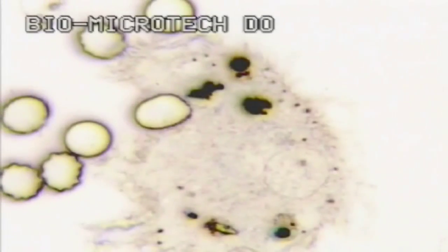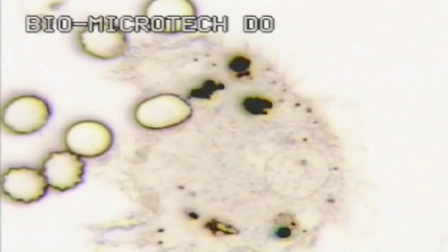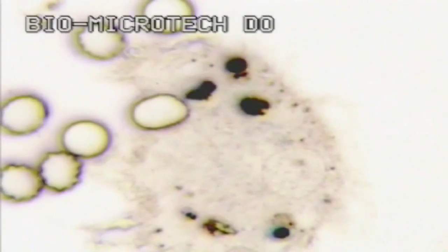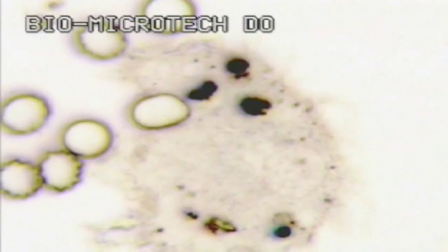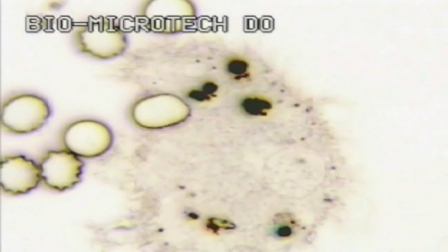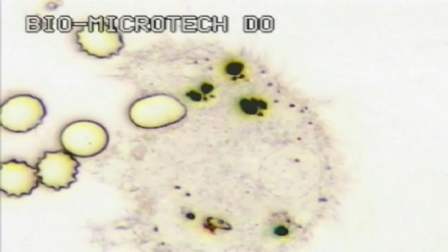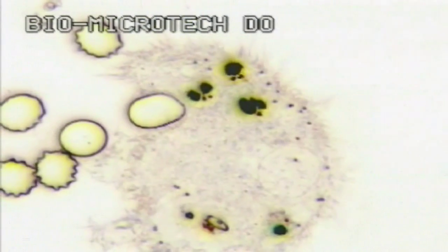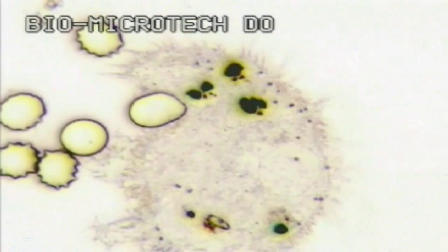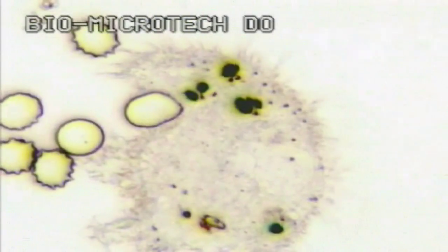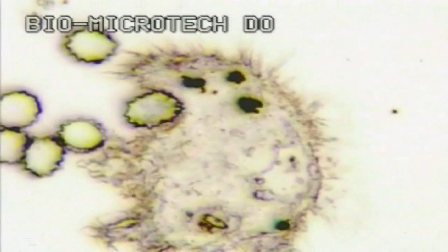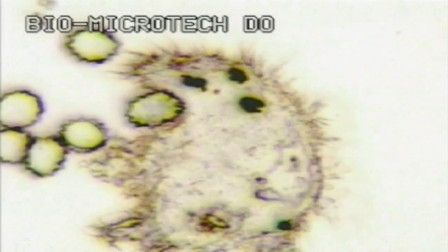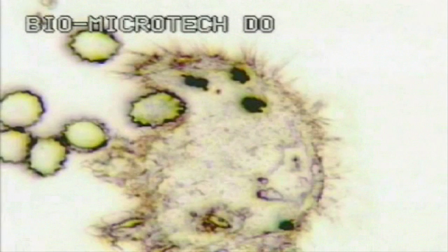This large monocyte cell is trying to engulf and destroy red corpuscles infected with malaria parasites. They look like cucumber slices on the right. This is a disease transmitted by a mosquito. Parasites enter red blood cells and can break them up. Look what happens when this monocyte dies.